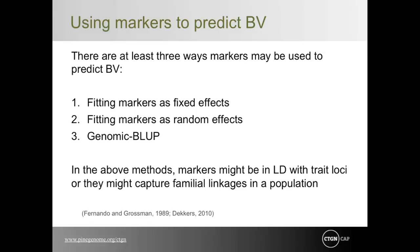Several possibilities exist for how marker genotype may be fit in a linear model to predict breeding values. In the first approach, markers can be treated as covariates or fixed effects in the linear mixed model. In the second approach, markers are considered as random effects. In the third approach, markers are not fit as factors in the model but are used to generate genomic relationships between individuals — the G matrix. The A matrix based on pedigree is replaced by the G matrix in linear mixed models. This third approach is fundamentally different from the first two.